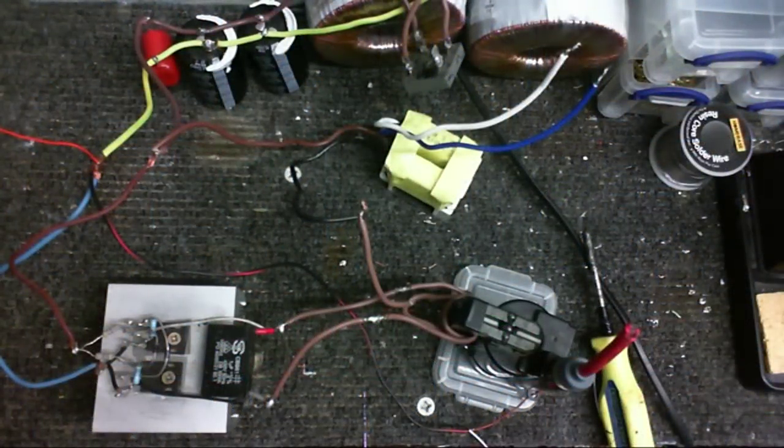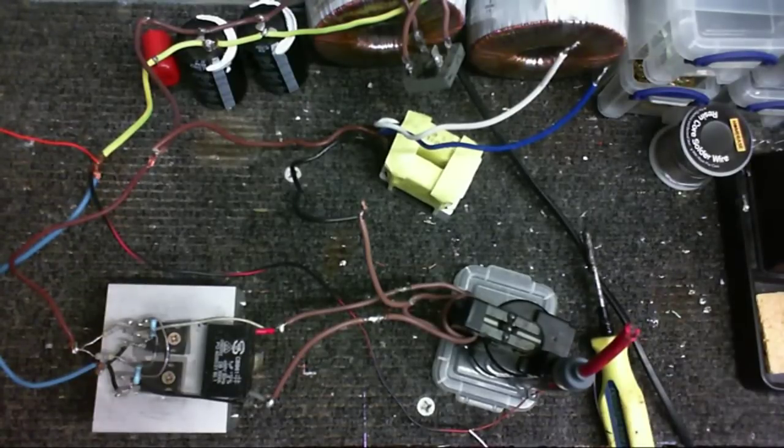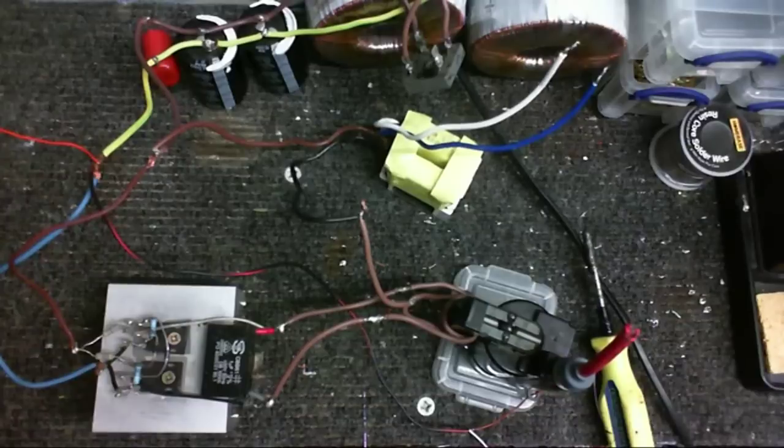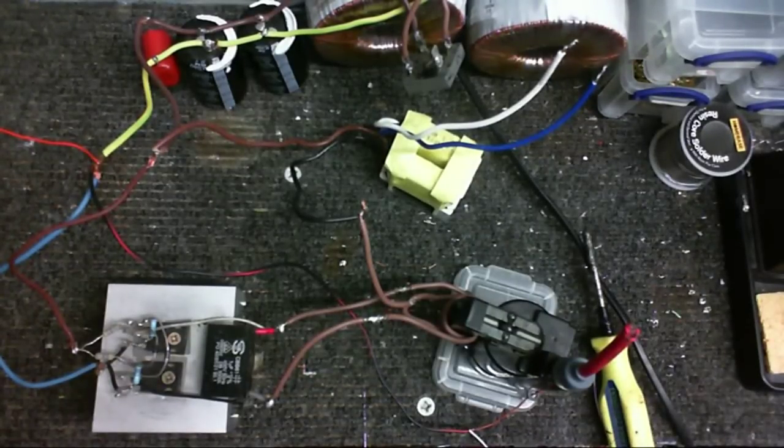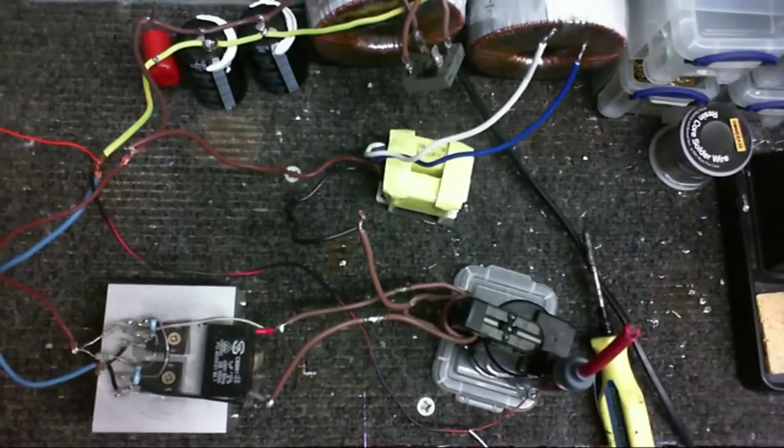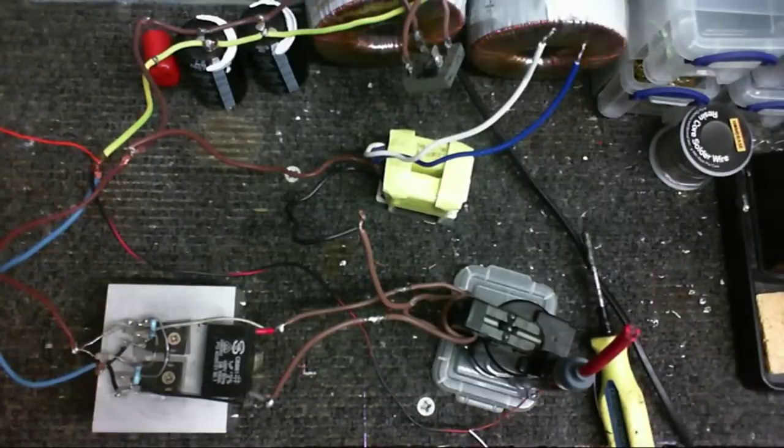Anyway, I've got my ZVS flyback driver out and I've been thinking of ways to audio modulate this so we can actually play music through it. About a year ago I got a comment from Powermax on one of my flyback driver videos and he said he knew a way of audio modulating a ZVS by winding an extra winding onto the inductor and then playing an audio signal into that. There's no videos of that being done so I thought I would do it myself and see if it works.